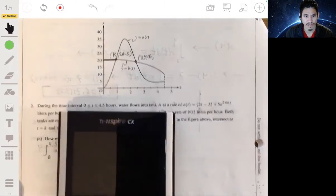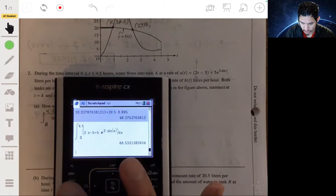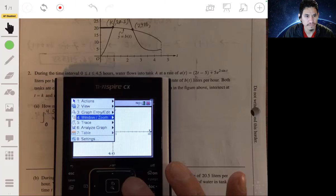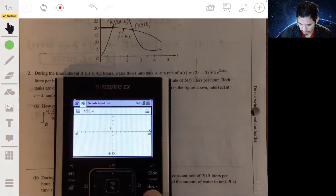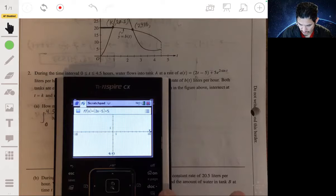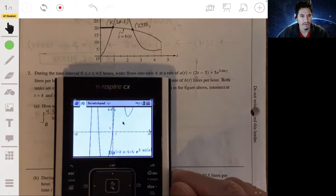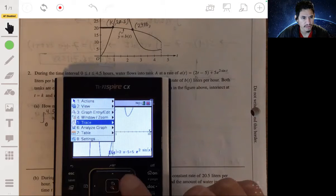The y value here will be 20.5. So let's find what k would be by using this equation. Let's look at the graph. So let's graph A of T. Let's go to graphing, delete all that. Graphing 2x minus 5 plus 5e to the 2x sine of x, and that's where it's equal to 20.5. This is just at a different scale. Let's zoom out.